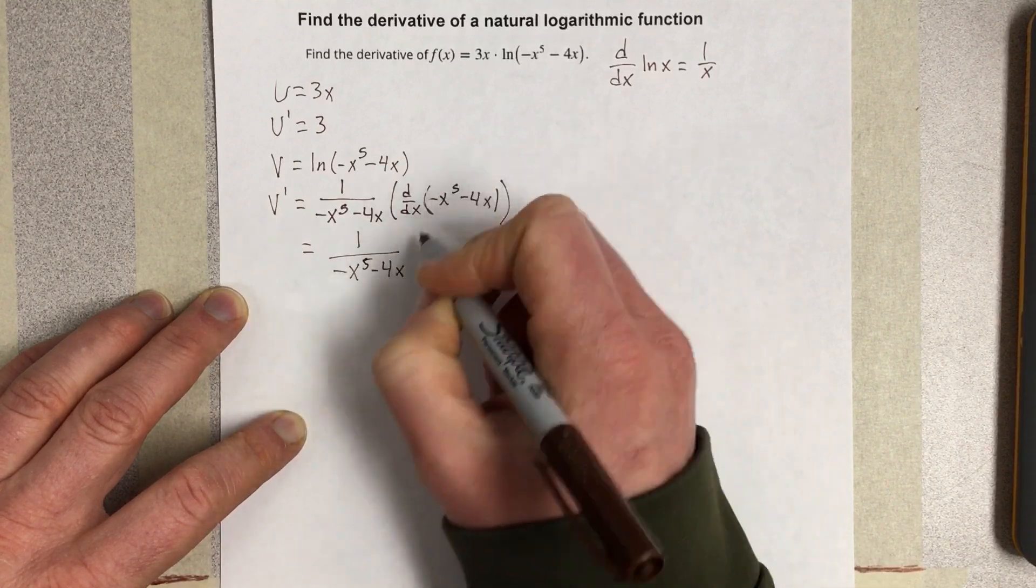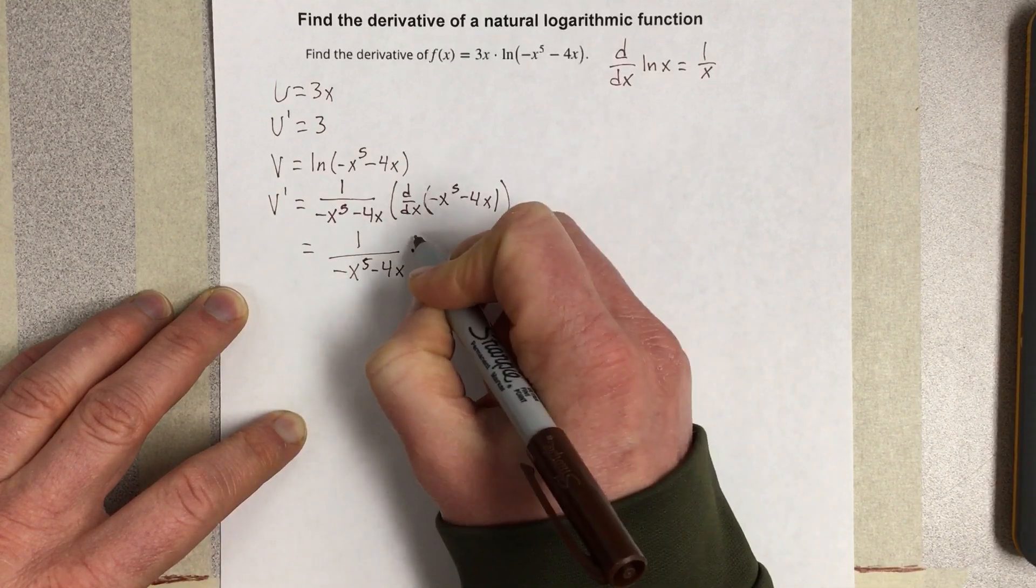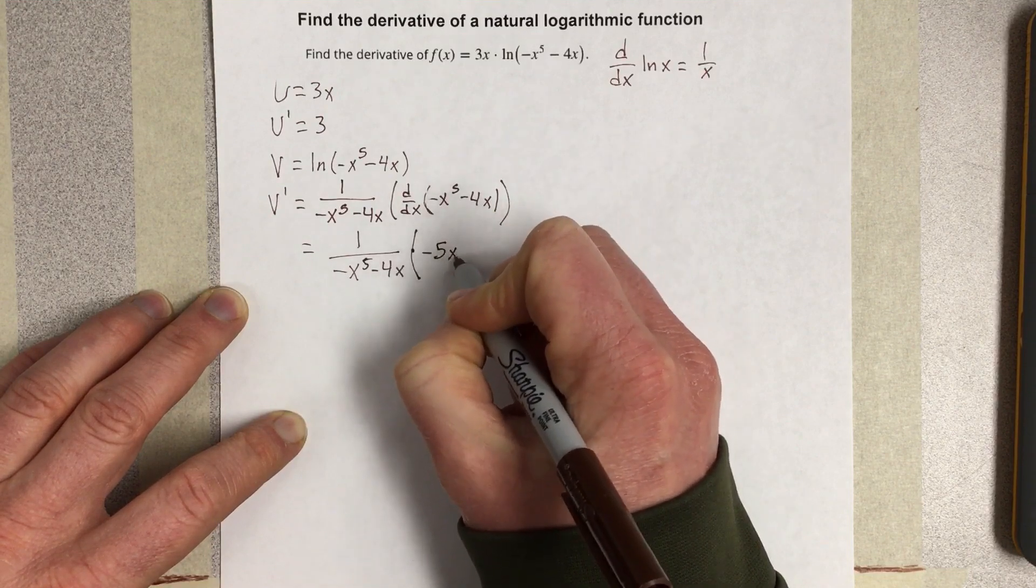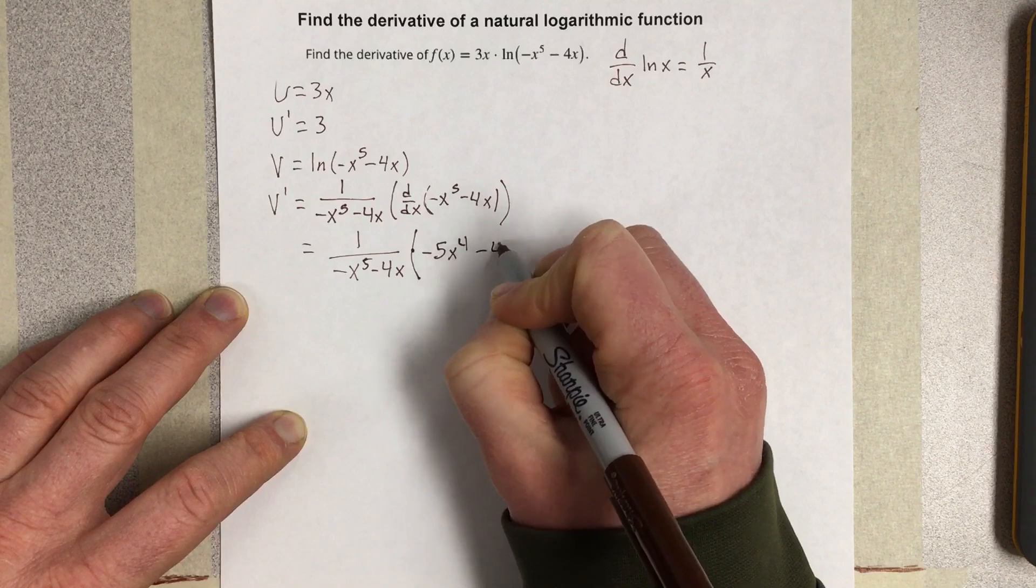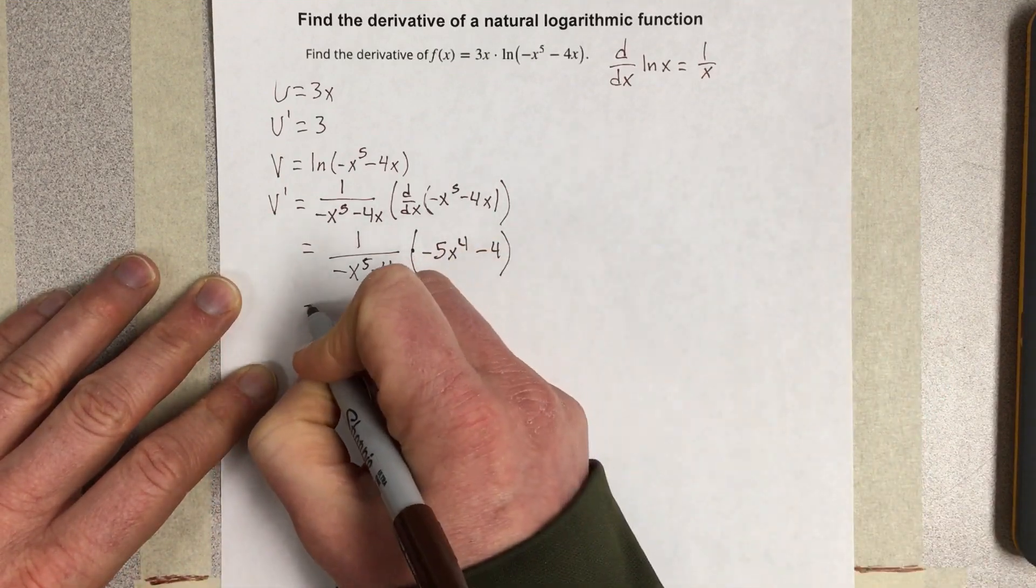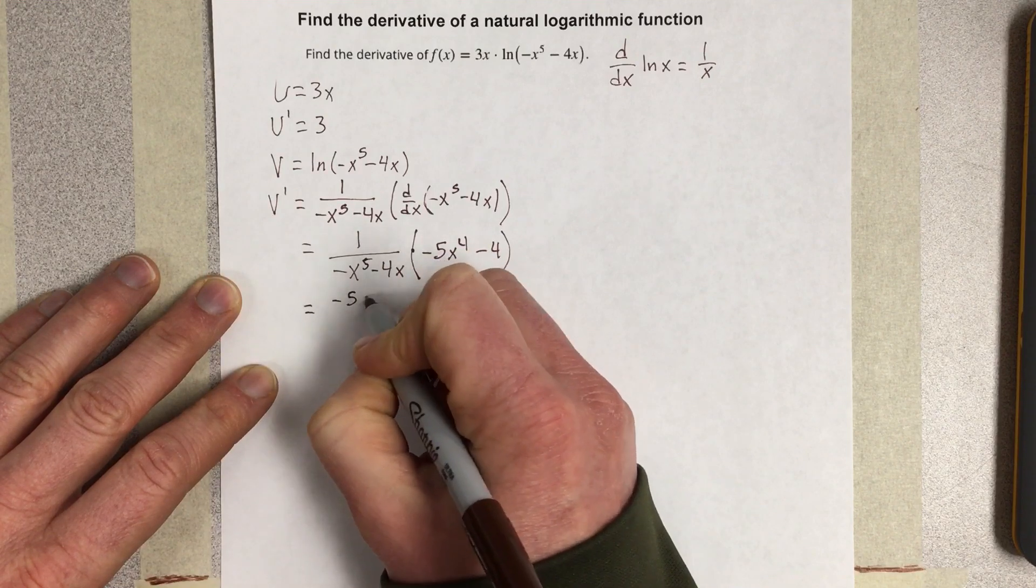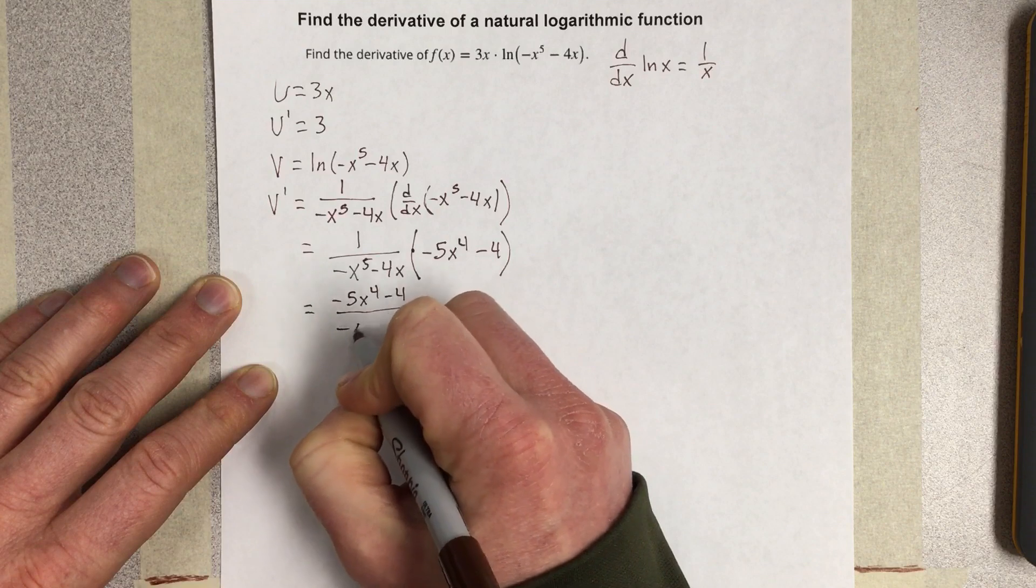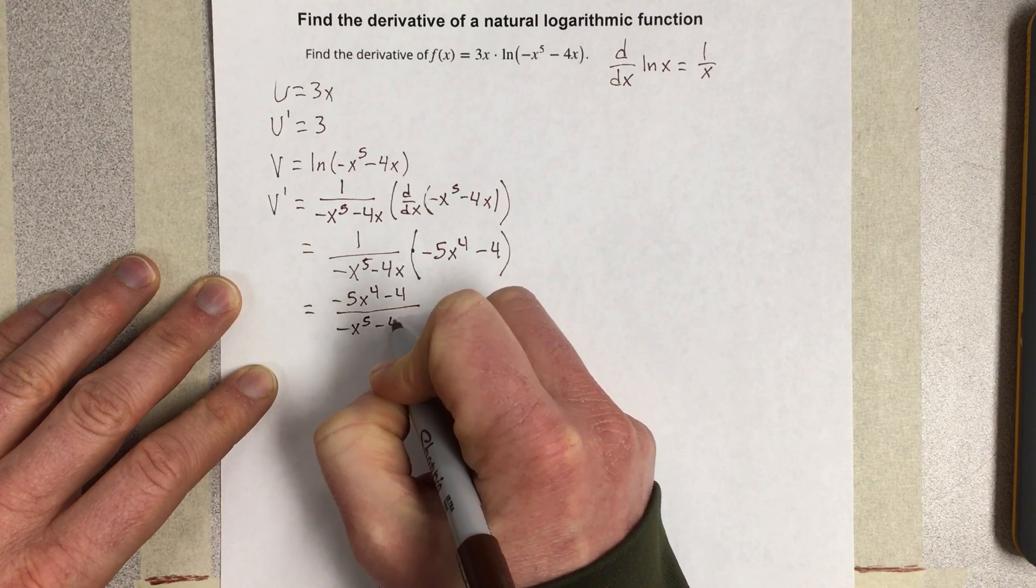The derivative here would be, so times, we're just going to put a parenthesis here, that would be negative 5x to the 4th minus 4. So I end up with negative 5x to the 4th minus 4 over negative x to the 5th minus 4x.